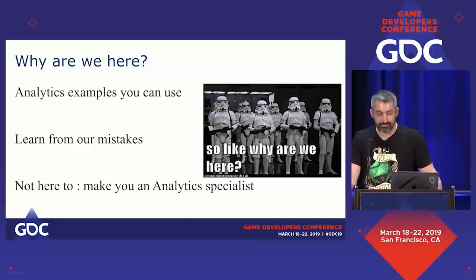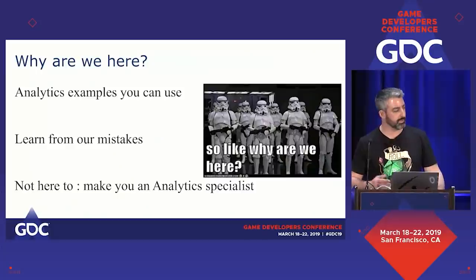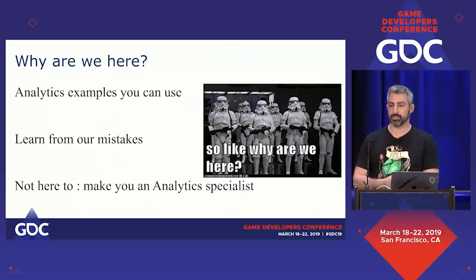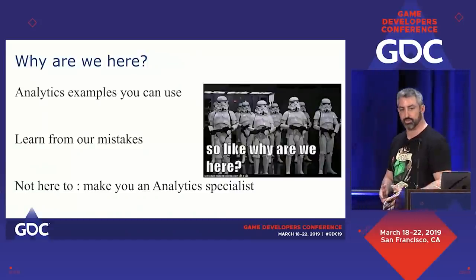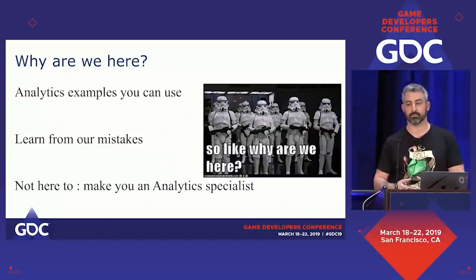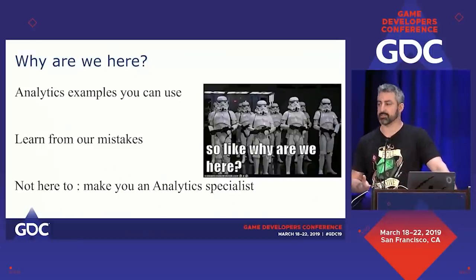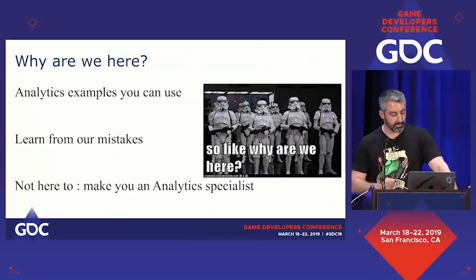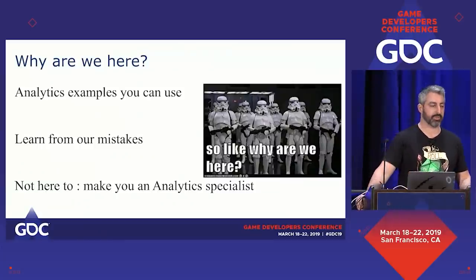Why are we here? We're here to equip you with analytics examples — things we've done mainly at Social Point that you can use in your own games. These examples work for any size studio: single-game studios, indie or not, multi-game studios. I've implemented these at Social Point and at Plarium, and even in companies doing mobile apps that weren't games. We're also here to learn from mistakes — hopefully saving you some headache and money — and to talk about things we did at Social Point that didn't work well or that we're doing differently now.